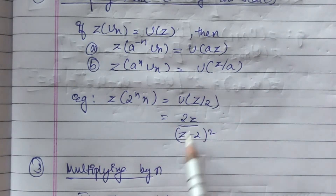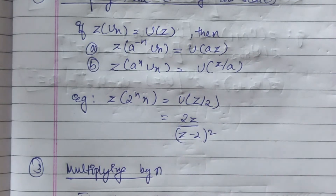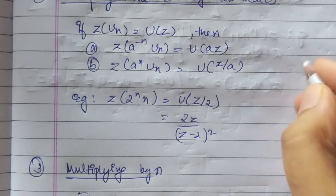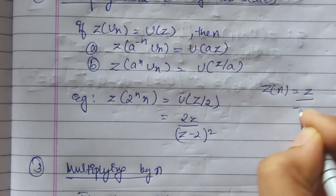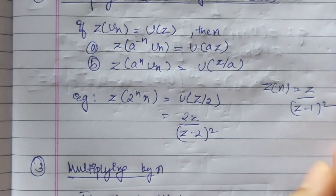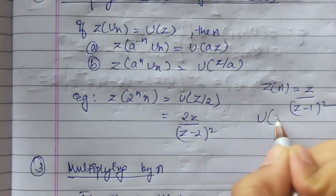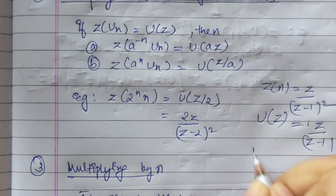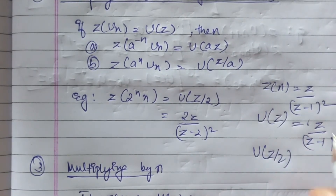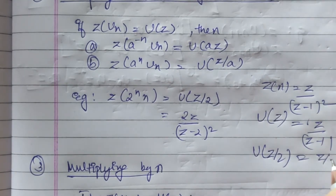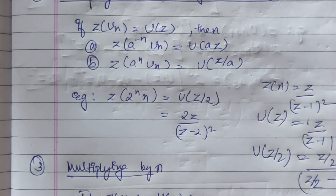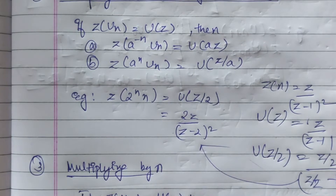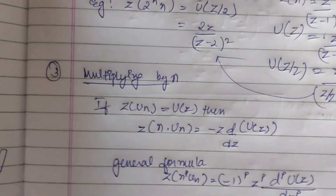We get 2z divided by (z−2)² . We know that Z{n} = z/(z−1)², which we have proved before. So U(z) = z/(z−1)². Therefore U(z/2) is obtained by substituting z/2 in place of z: it gives (z/2) divided by (z/2 − 1)², which on further evaluation gives 2z/(z−2)².